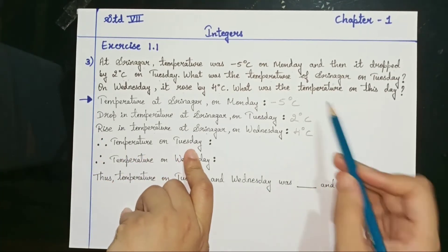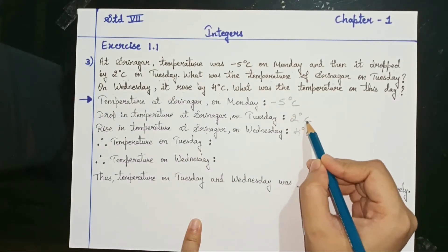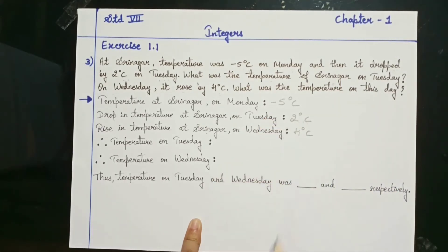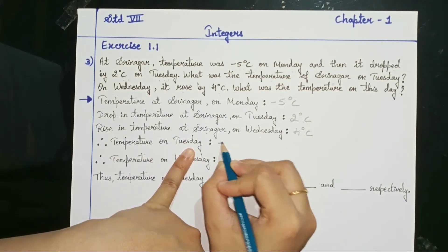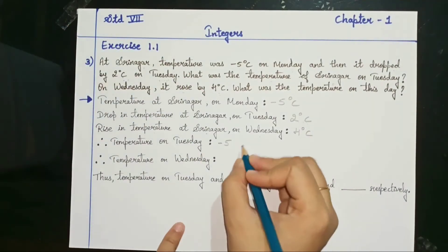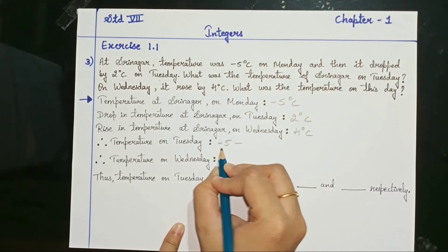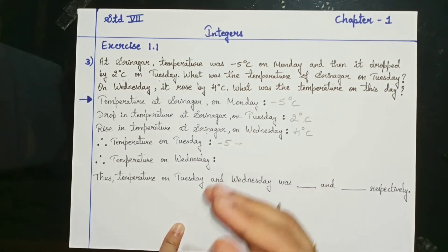Therefore, what will the temperature on Tuesday be? On Monday it was minus 5 degrees Celsius, then on Tuesday it dropped by 2 degrees Celsius. Drop means it became less. Became less means you have to do subtraction. Monday's temperature was minus 5, and because it dropped, we subtract — minus 5 is Monday's temperature.